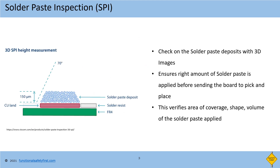The first method is solder paste inspection. This method checks the solder paste deposits using 3D images to ensure the right amount of paste is applied before sending the board to the pick and place process. This test verifies the area of coverage, shape, and volume of the solder paste applied over the bare PCB board.